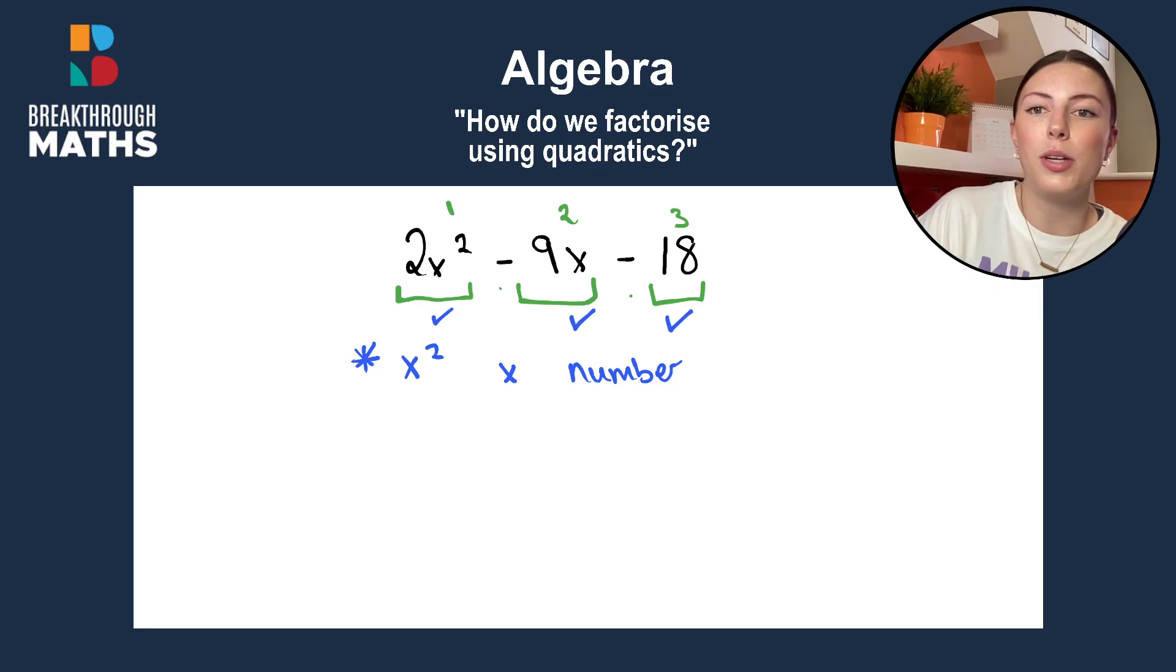Now on to how we solve the quadratic. We must look at the first term and the last term and get their factors. So, for 2x squared, we do the number part first. So the factors of 2 are 2 and 1, and the factors of x squared are x by x. And that's our first term done.